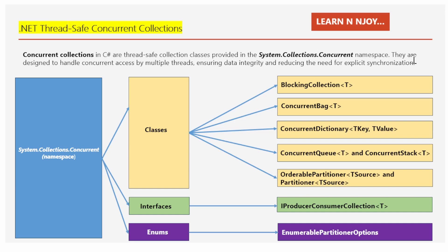It provides special collections that multiple threads can access safely at the same time. The System.Collections.Concurrent namespace has classes, interfaces, and enums that help handle concurrent access by multiple threads, ensuring data integrity and reducing the need for explicit synchronization. If you see the diagram shown here, we have classes like BlockingCollection<T>, ConcurrentBag<T>, ConcurrentDictionary<TKey, TValue>, ConcurrentQueue<T>, and ConcurrentStack<T>, along with OrderablePartitioner<TSource> and Partitioner<TSource>. For interfaces, we have IProducerConsumerCollection<T>. For enums, we have EnumerablePartitionerOptions.